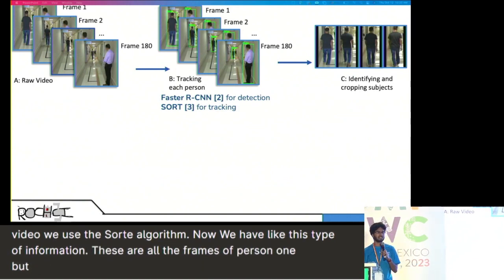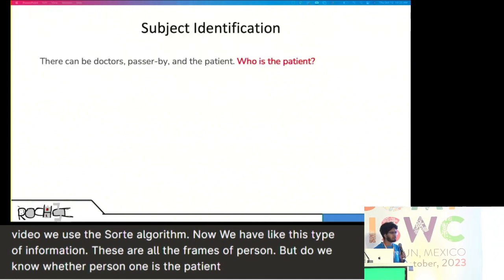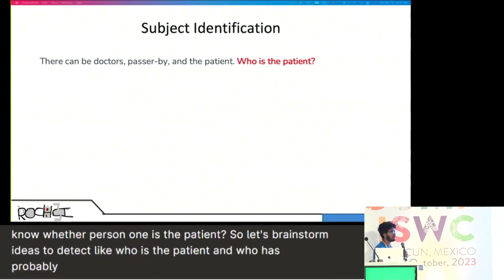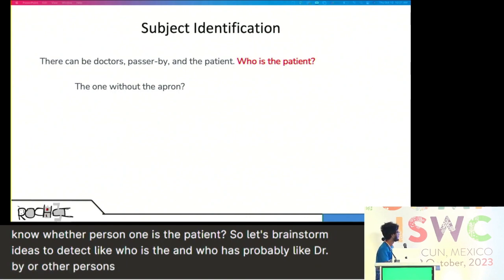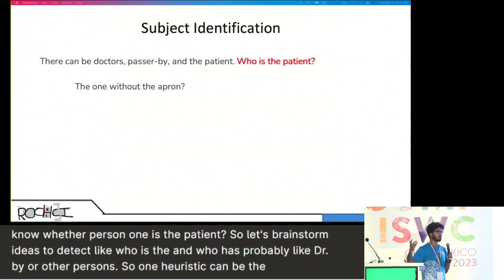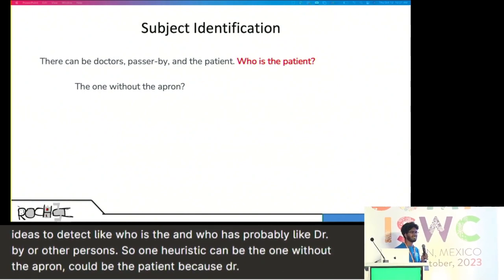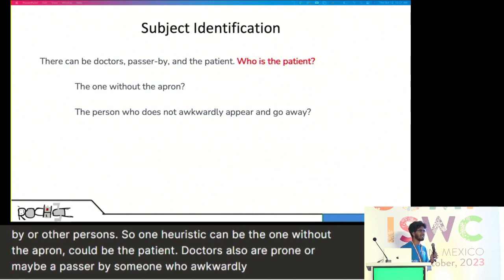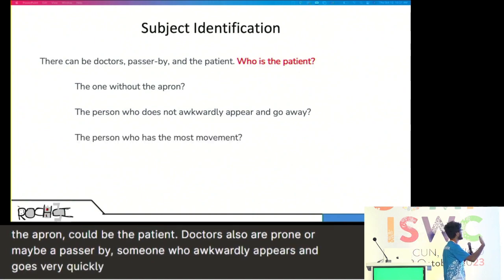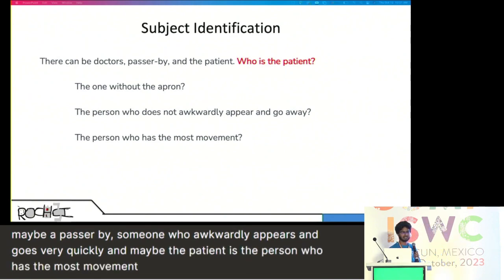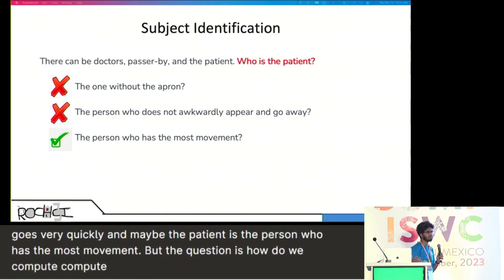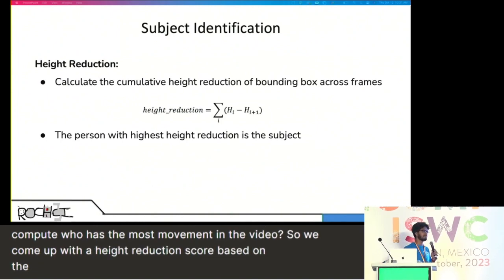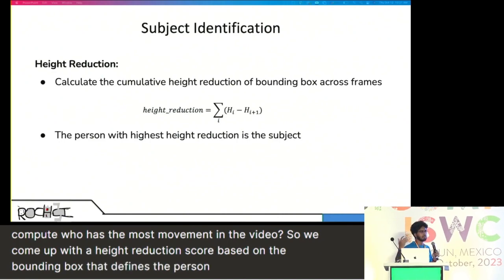But do we know whether person one is the patient? We can brainstorm some ideas: the one without an apron could be the patient, since doctors always wear aprons. Or a passerby is someone who awkwardly appears and goes away quickly. Maybe the patient is the person who has the most movement. We come up with a height reduction score based on the bounding box that defines the person — you can read more about it in our paper.